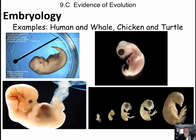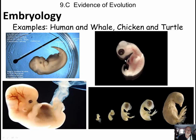Embryology. Going to show examples of humans, whales, chickens, and turtles. If you take a look at this, this is a human fetus in the fifth week of development — a very prominent tail, gill slits that are visible, this is the front arm, and the back leg is just starting. We actually have other species here as well.